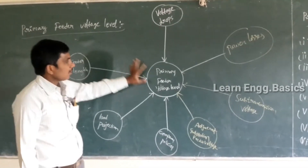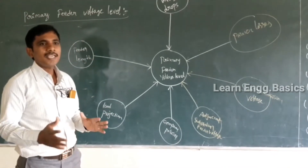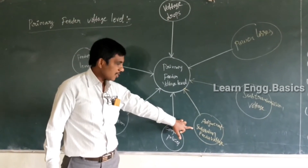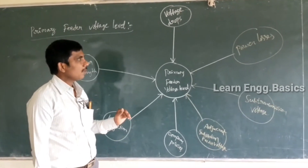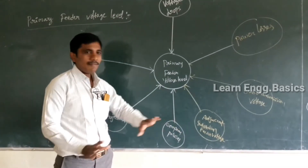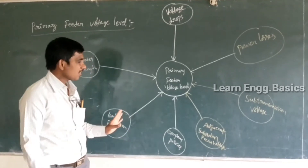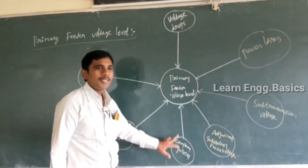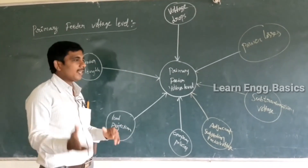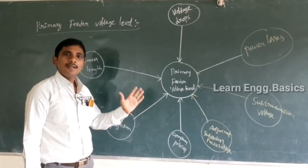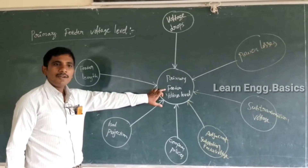Another factor: primary feeder voltage level depends on adjacent substation feeder voltage. If a nearby substation is 66 kV, then the primary feeder voltage level may not be 11 kV. So 66 kV, 33 kV, or 11 kV are the primary feeder voltage levels, which also depend on adjacent substations. Company policies, such as APSPDCL policies, also influence the primary feeder voltage level — for small rural areas 11 kV is used, while for towns and cities 33 kV feeders are sometimes used.